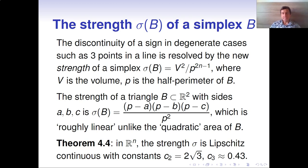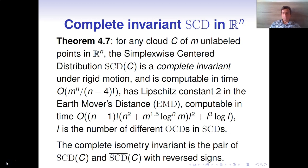That's why to make the resulting invariant Lipschitz continuous, we introduced the key new ingredient: the strength of a simplex, which is the square volume of the simplex divided by the 2n-1 power of the half-perimeter ρ. This function is roughly linear, that's why Lipschitz continuous with a small constant.